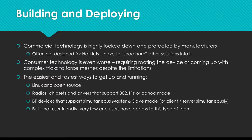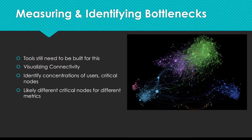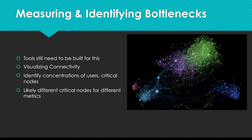Another challenging area is measuring and identifying bottlenecks in these networks. A lot of the tools for this type of work don't exist yet — things like visualizing connectivity with maps of connections, identifying concentrations of users, critical nodes, and devices in the network. For example, there might be one node that is really key for high throughput, and a different node that's key for maintaining low delay. This opens things up for load balancing, route optimizations, and gateway load distribution.